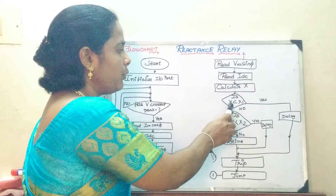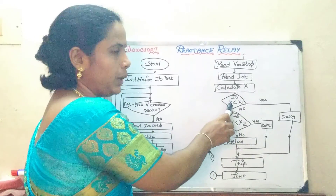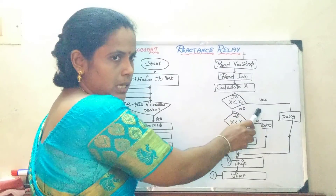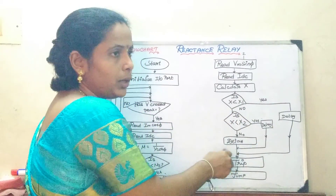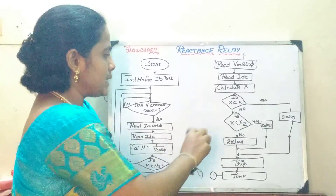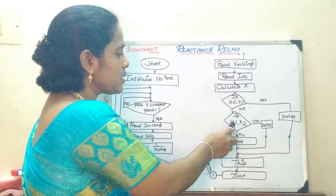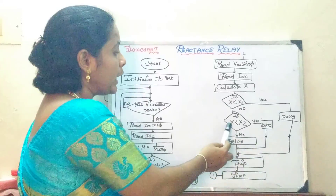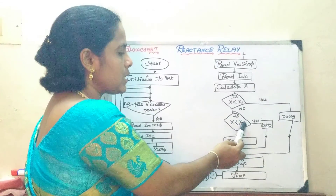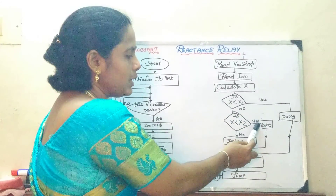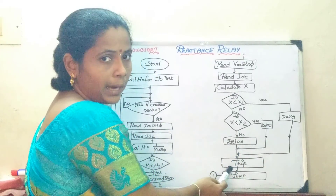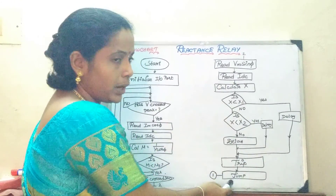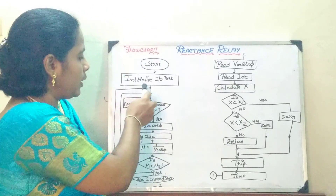Now you will check the condition. If the reactance obtained is less than your LX1, then after a predetermined delay, it will trip the circuit. Else, if X is not less than X1, you are going to check whether it is going to go for the adjacent line — if the reactance is less than your X2. If yes, after a predetermined delay, it will trip the circuit. If both conditions do not exist, it will go back and check the condition again.